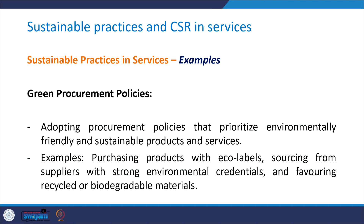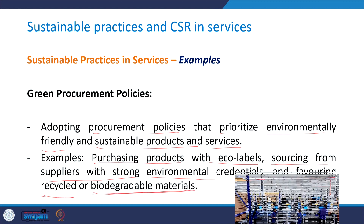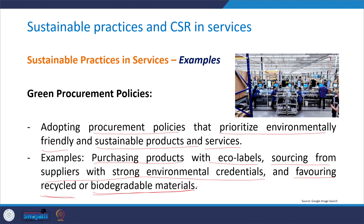The next sustainable practice involves having green procurement policies. This involves adopting procurement policies that prioritize environmentally friendly and sustainable products and services. Activities include purchasing products with eco-labels, sourcing from suppliers with strong environmental credentials, and favoring recycled or biodegradable materials. For example, Google has a comprehensive sustainable procurement program ensuring that the products and services it procures are environmentally friendly. They prioritize suppliers who demonstrate sustainable practices such as using renewable energy and minimizing waste.